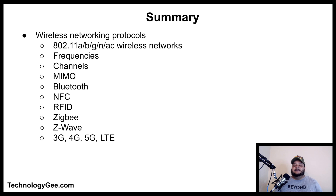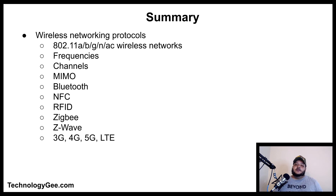In summary, we covered wireless networking protocols including the 802.11 a/b/g/n/ac wireless networks, frequencies, channels, MIMO, Bluetooth, NFC, RFID, Zigbee, Z-Wave, 3G, 4G, 5G, and LTE. If you got something valuable out of this video, please hit like, share, drop a comment, and subscribe. Visit the website for charts and resources to help you pass the CompTIA A+ 220-1001 examination.